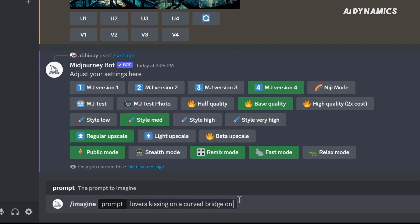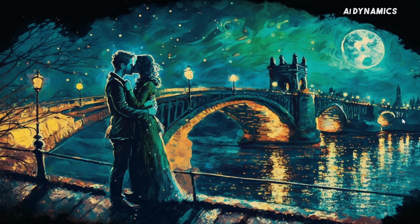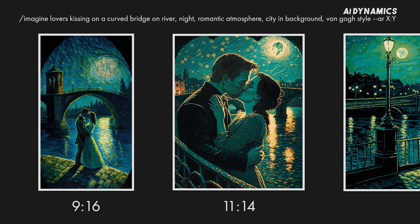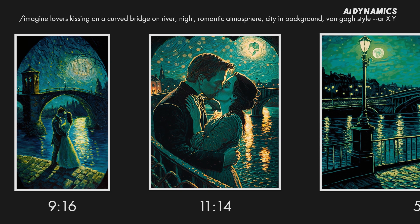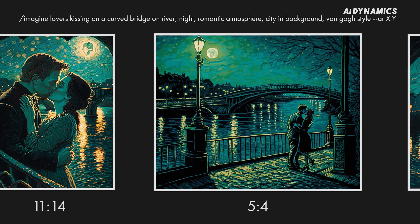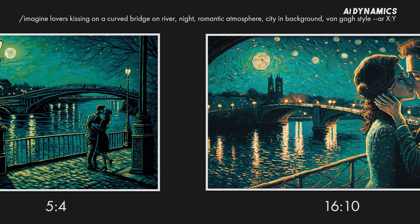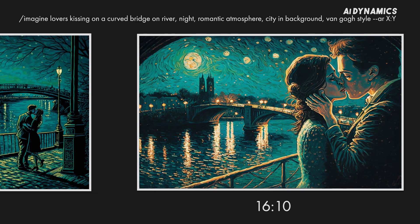Imagine lovers kissing on the curved breeze on a river, night, romantic atmosphere, city in the background, Van Gogh style, AR 16 to 9. And our cool wallpaper is ready. What a beauty — I always liked Van Gogh. Here are a few more images with different aspect ratios generated with the same prompt. Keep in mind, you can't use the seed parameter or image URLs to generate different aspect ratios of the same image. This may change in the future.